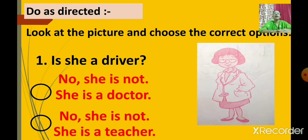Look at the picture and choose the correct options. You are going to look at the picture, observe it properly, and tick on the correct answer. Two options are given; from that, only one correct answer you are going to click. Understood? So let us start.